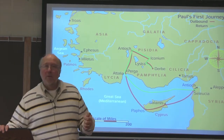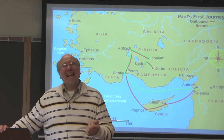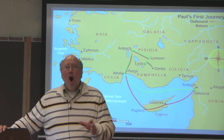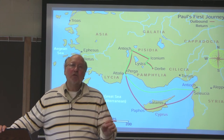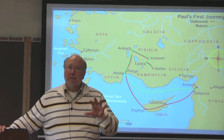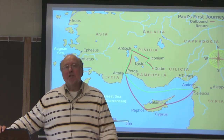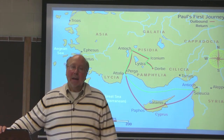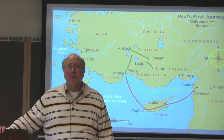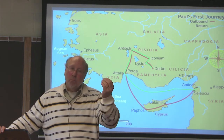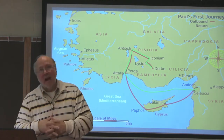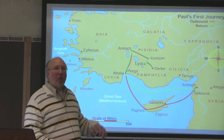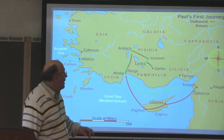In 2 Timothy 4, Paul at the end of his life — around 68 AD, knowing he's going to die — says, 'Timothy, go get John Mark and bring him here to me, because he is profitable for me and my ministry.' So at the end of his life, Paul and John Mark are reconciled, and Paul asks that John Mark be brought to him. Earlier Paul would have nothing to do with him because he quit — but they were ultimately reconciled. That's what happened at Perga.